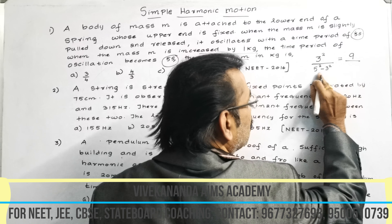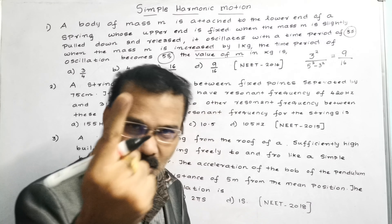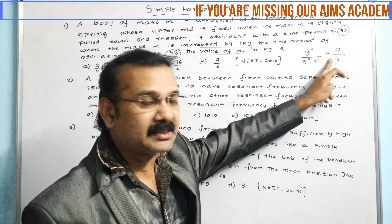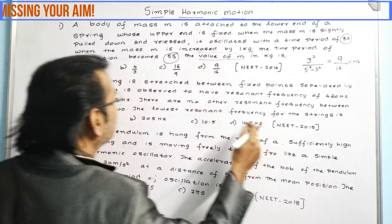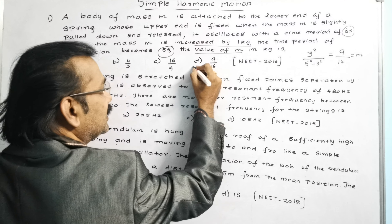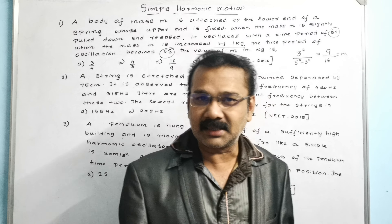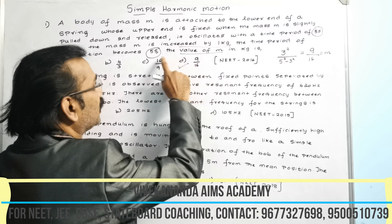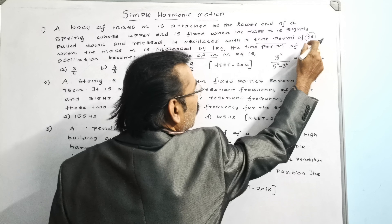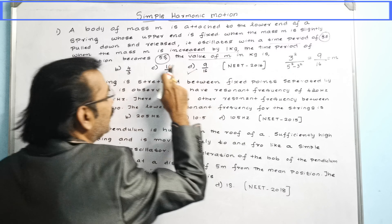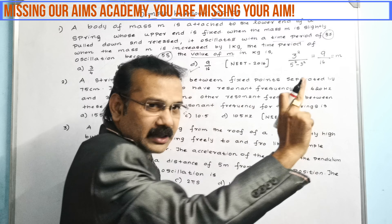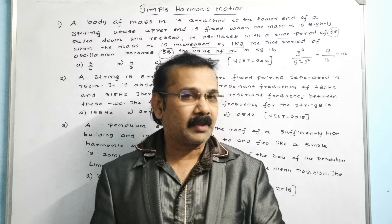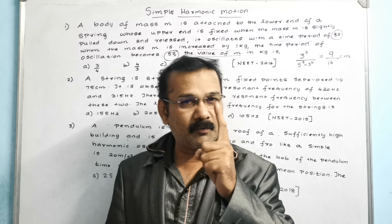The answer is 9 by 25 minus 9, which equals 9 by 16. That's all — we got the answer immediately. The value of M is 9 by 16. Just check the options: the answer lies at option D, which is 9 by 16. The method: find the smallest time period (3), square it; square the biggest (5); put minus — and we get 9 by 16 without using any formula, within a fraction of seconds.